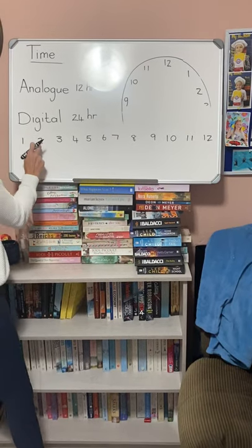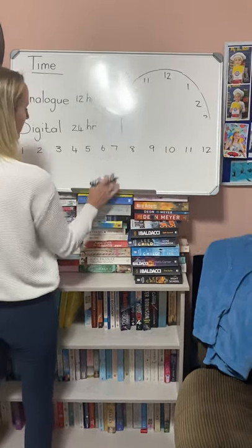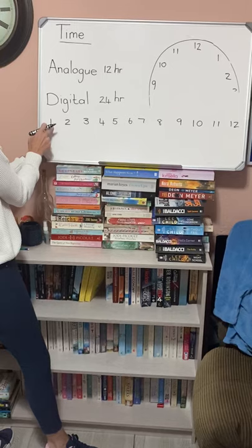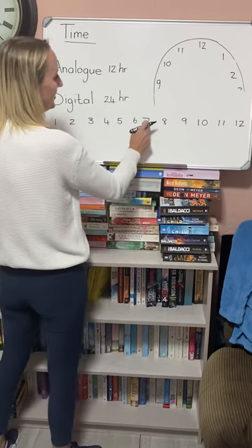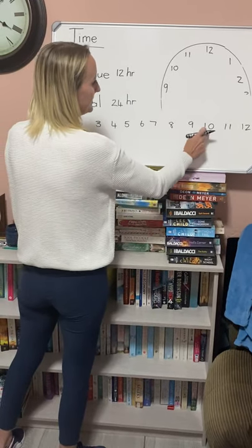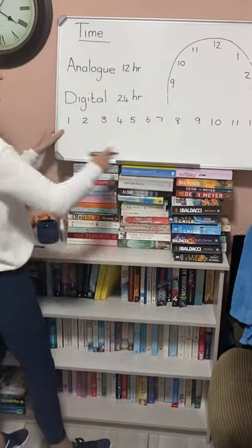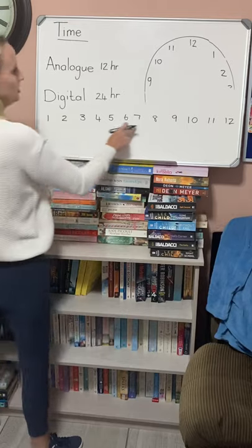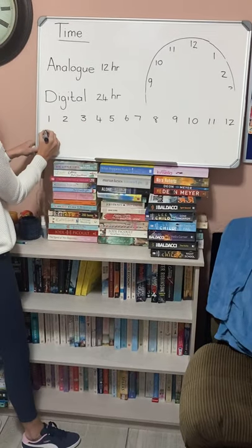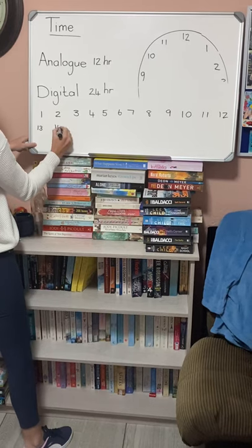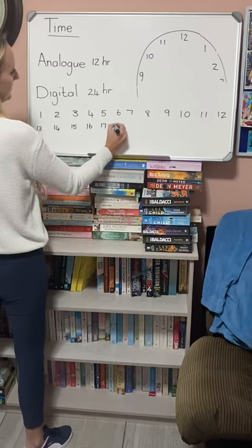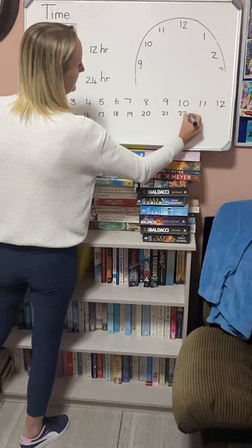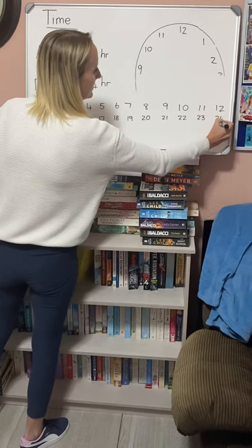So that would be one o'clock in the morning, two, three, four, five, six, seven, eight, nine, ten, eleven, twelve — I get to midday and then I start again: one in the afternoon, two in the afternoon, three, four, five, six, seven at night, eight at night, nine, ten, eleven, and then I get to midnight. Analog just keeps going in twelves, but digital goes to twelve and then for the second round says: thirteen, fourteen, fifteen, sixteen, seventeen, eighteen, nineteen, twenty, twenty-one, twenty-two, twenty-three and twenty-four.